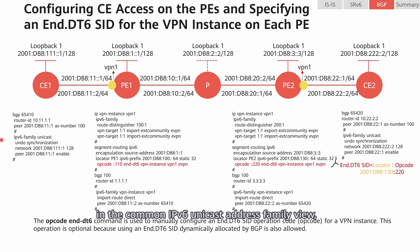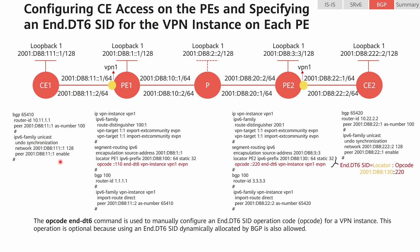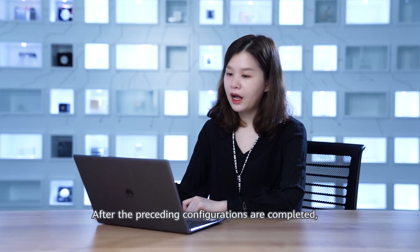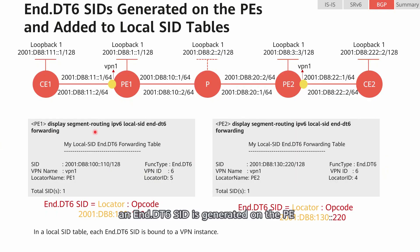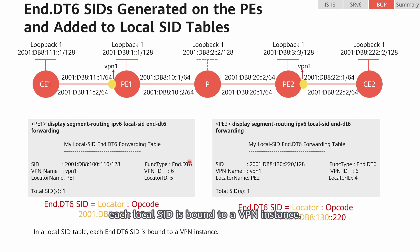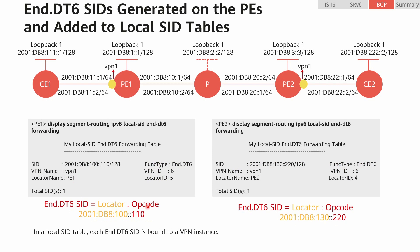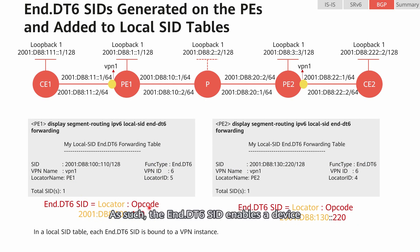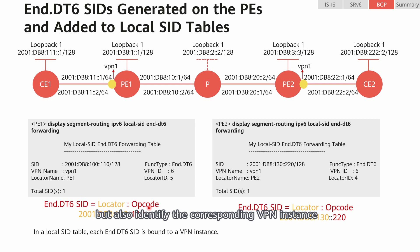We need to configure BGP on C1, enabling the BGP peer relationship between C1 and P1. On C1, the configuration must be performed in the common IPv6 unicast address family view, and the local routes of C1 can be imported during the configuration. As for P1, the configuration must be performed in the IPv6 VPN instance address family view. After the preceding configurations are completed, an End.DT6 SID is generated on the PE and added to the local SID table, in which we can see that each local SID is bound to a VPN instance. An End.DT6 SID consists of two parts — locator and opcode — where the locator provides the locating function while the opcode represents a specific VPN instance.